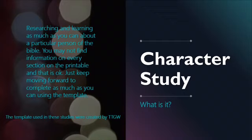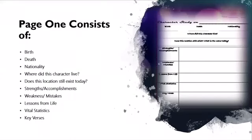Page one consists of birth, death, nationality, where did this character live, does this location still exist, strengths, accomplishments, weaknesses, mistakes, lessons from life, vital statistics, and key verses.